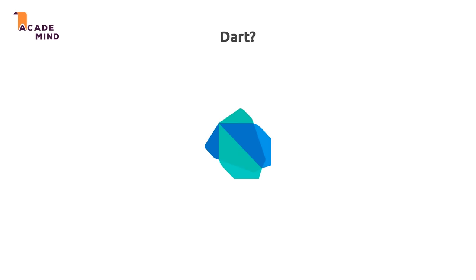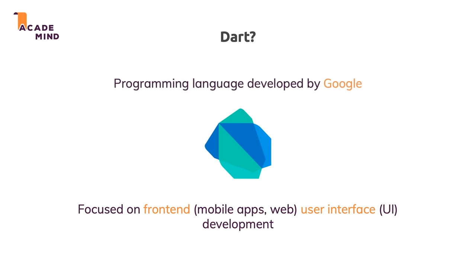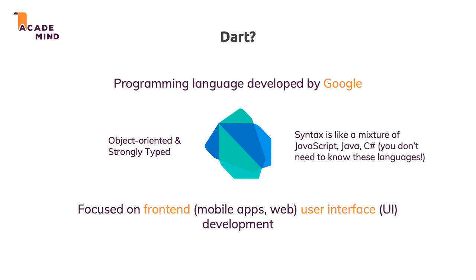Flutter uses a programming language called Dart. Dart is focused on building front-end user interfaces and is independent of Flutter — you can also build web apps with it. Flutter uses Dart primarily for building mobile apps. Dart was developed by Google, just like Flutter, and the two teams work together closely, giving us a hand-in-hand solution.